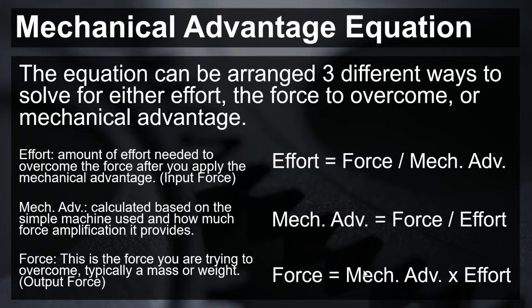As you can see to the right, there are three different equations that all use the three different variables. If you are looking to solve for effort, you would simply divide force by mechanical advantage. If you were solving for mechanical advantage, you would divide the force by the effort. If you were looking for the output force, you would multiply the mechanical advantage times the effort.